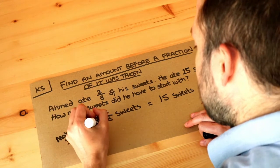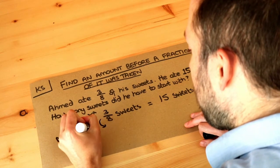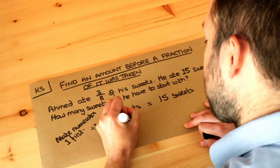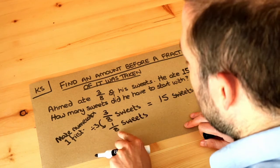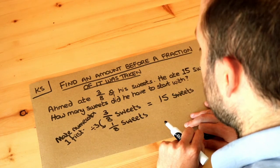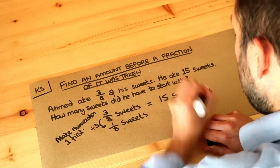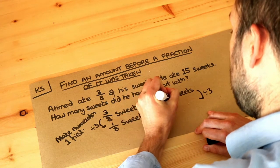So if we have three eighths of his sweets we could divide this by three to find one eighth of his sweets. Because one eighth is three times smaller than three eighths. So if we divide the right hand side by three as well then fifteen divided by three is five sweets.